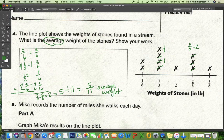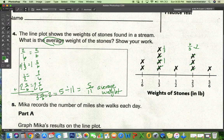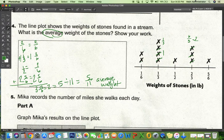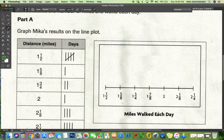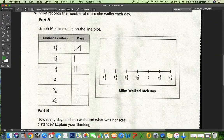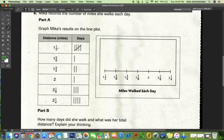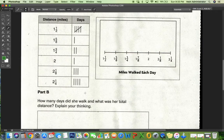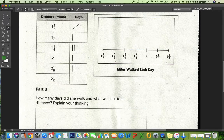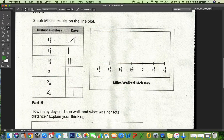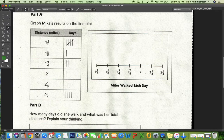Let's take a look at number five. Mika records the number of miles she walks each day. So there's our line plot. I'm going to zoom out a little. That's how many days she did each of these. So I'm going to have to put the dots there. And then it wants to know how many days did she walk and what was her total distance. So I've got to figure out how many dots I have and then figure out the total distance by adding all the fractions up.